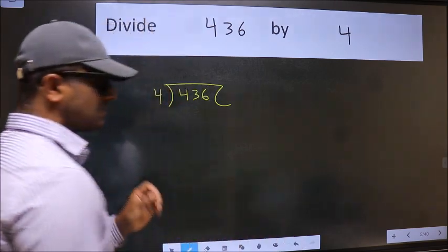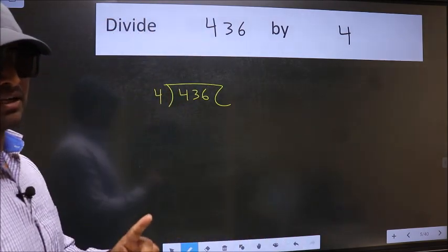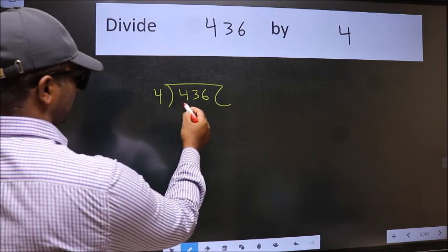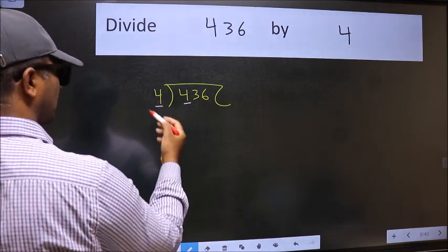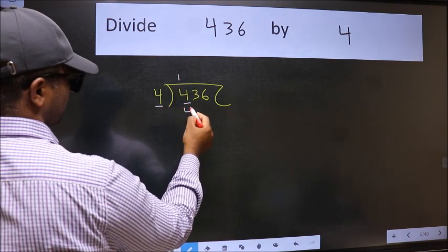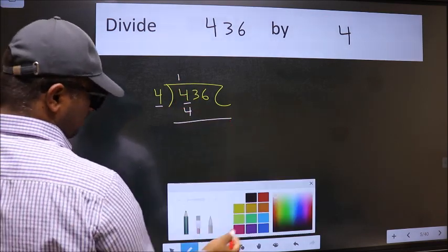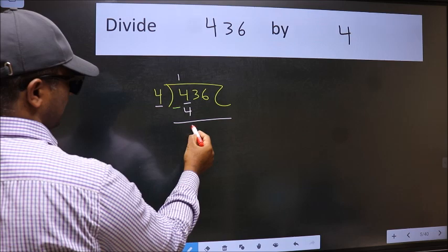This is your step 1. Next, here we have 4. Here also 4. When do we get 4 in 4 table? 4 once 4. Now we should subtract. We get 0.